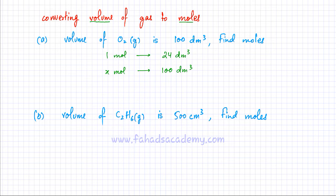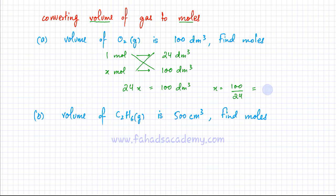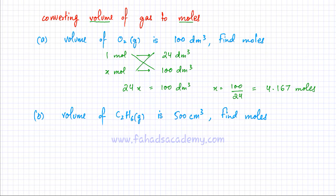Cross multiplying gives 24x = 100, so x = 100 ÷ 24 = 4.167 moles of gas, rounding to four significant figures. I was given the volume of gas and converted that into moles using ratios the other way around.